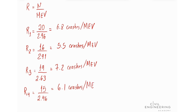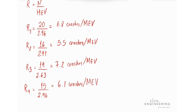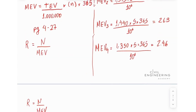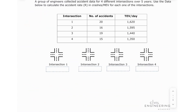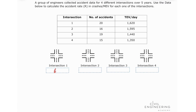This is a fill-in-the-blank type of question, which is the kind that can pop up on your real exam. Let's simulate that and input these values: 6.8 crashes per MEV, 5.5 crashes per MEV, 7.2 crashes per MEV, and 6.1. This concludes the exercise — I hope you learned a lot and I'll see you next time.